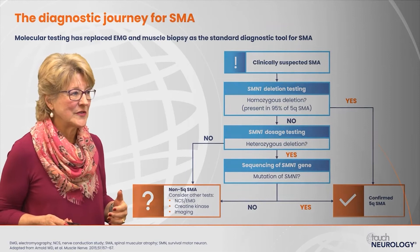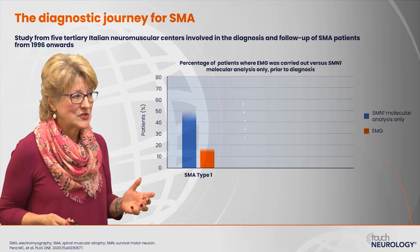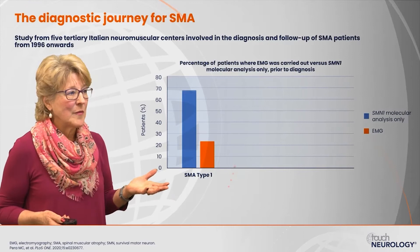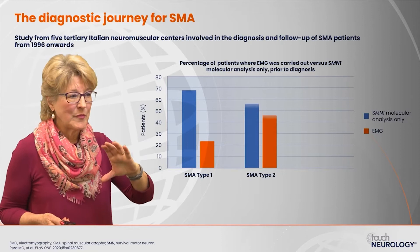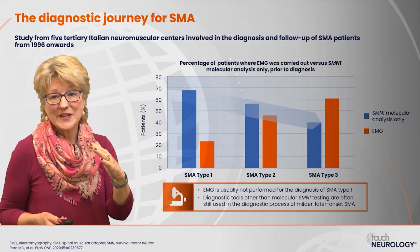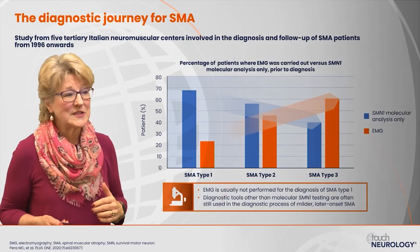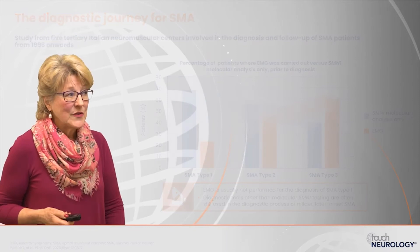The diagnostic journey for SMA has changed. In a study of five tertiary Italian neuromuscular centers collecting data from 1996 onward, molecular analysis for type 1 patients is done more frequently than for type 3 patients. Conversely, electrical studies — nerve conduction studies and EMGs — are done more often in the more mild phenotype patients, type 3 or 4, than in type 1 patients.